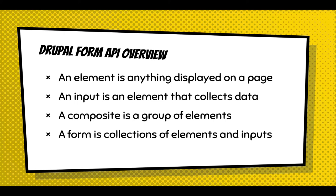An overview of Form API: an element is anything displayed on a page; an input is an element that collects data; a composite is a group of elements — in core the simplest example is radio buttons, where each individual radio is an input but the composite is the group of radio buttons together. A form is a collection of elements and inputs.